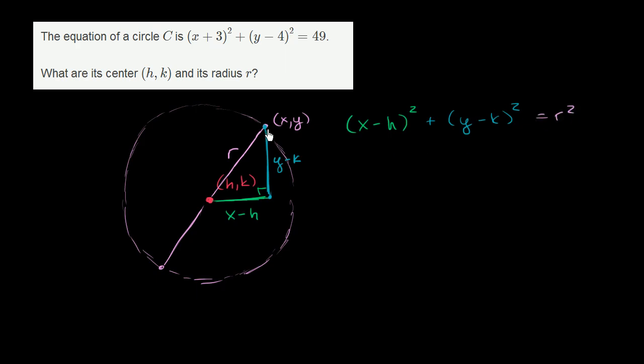This is the equation for the set. This describes any x and y that satisfies this equation will sit on this circle. Now with that out of the way, let's go answer their question.